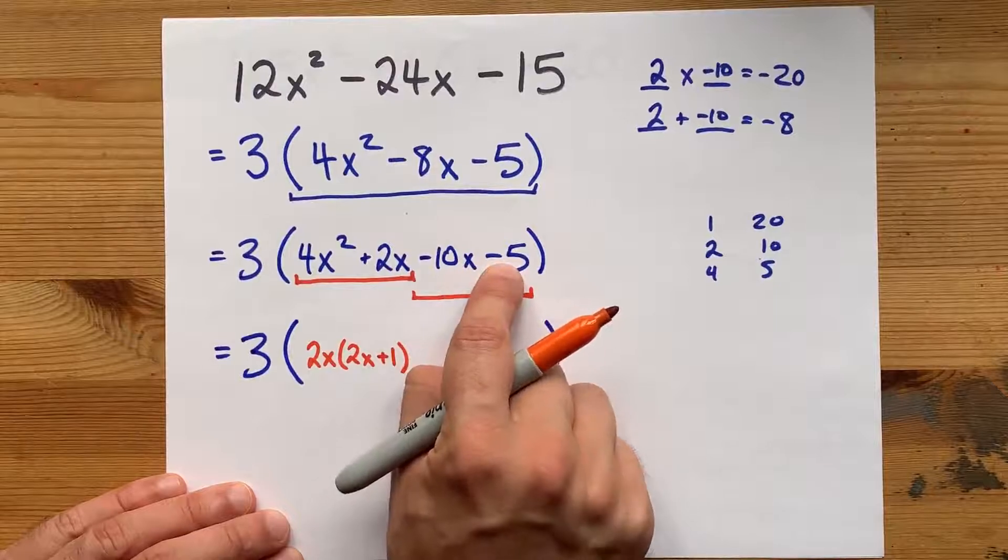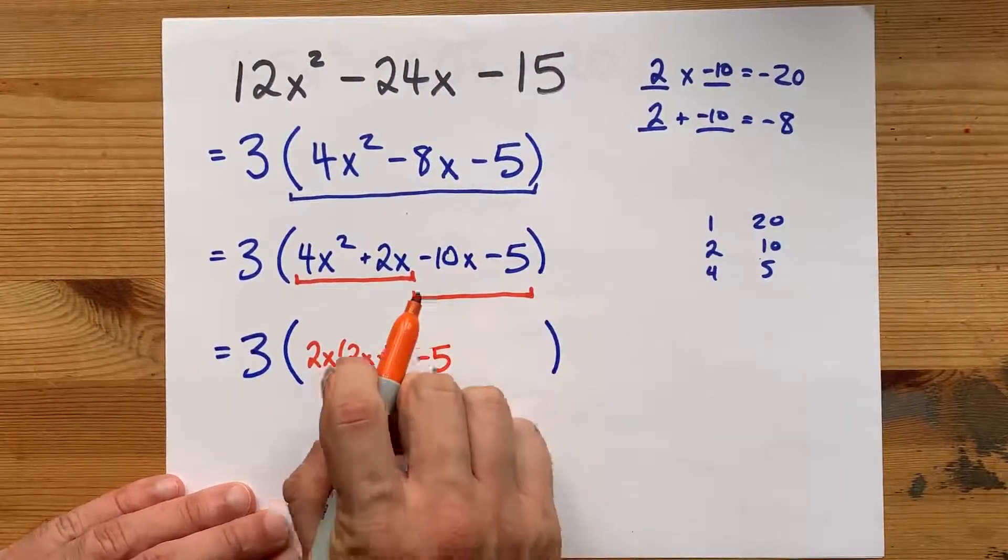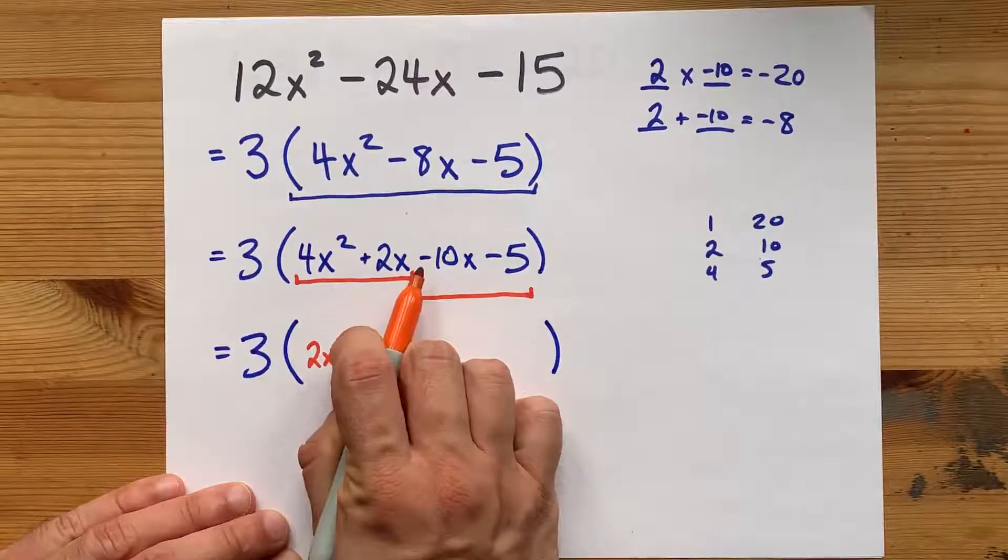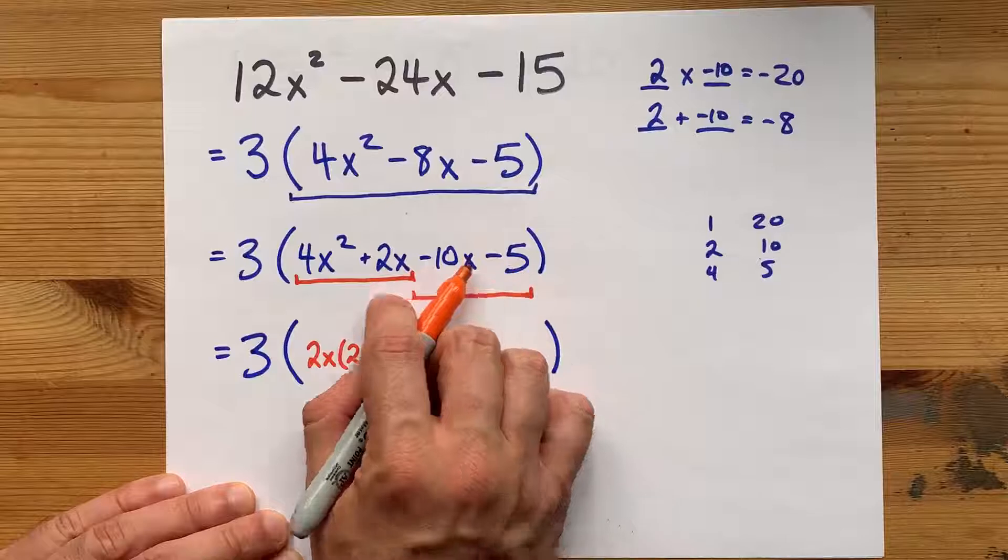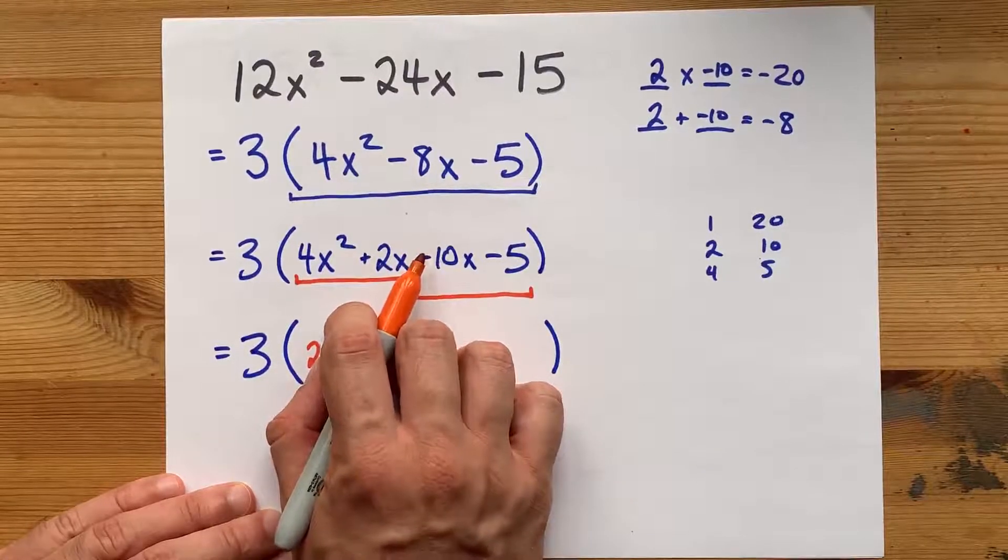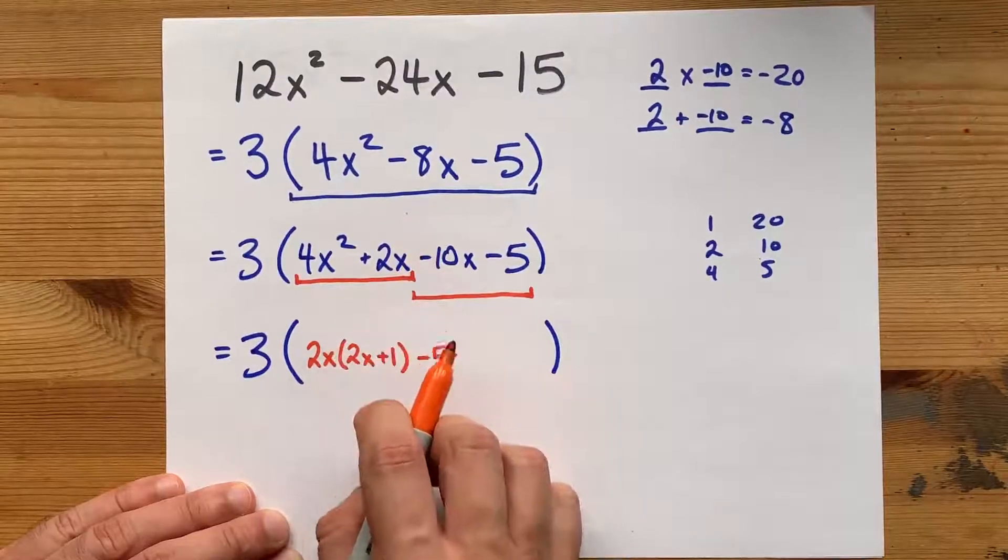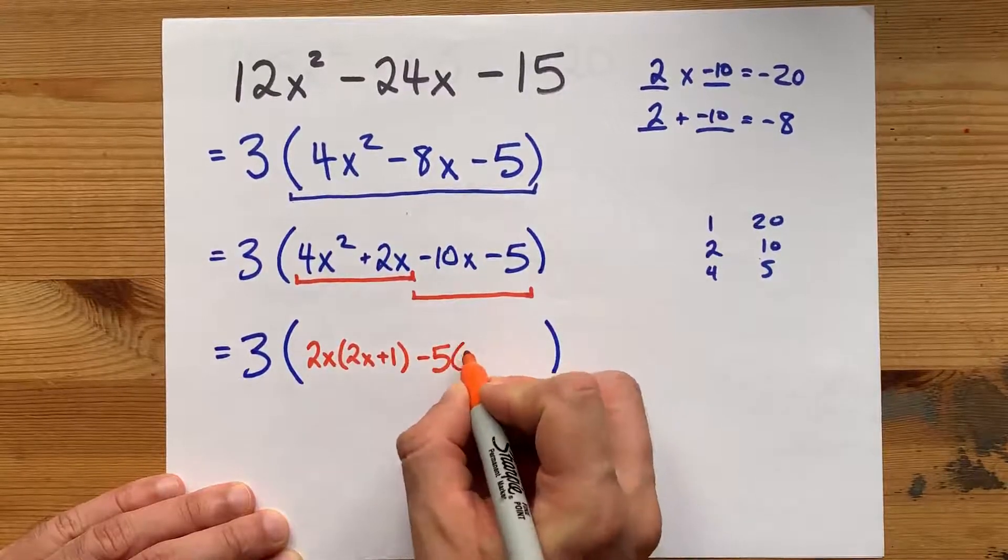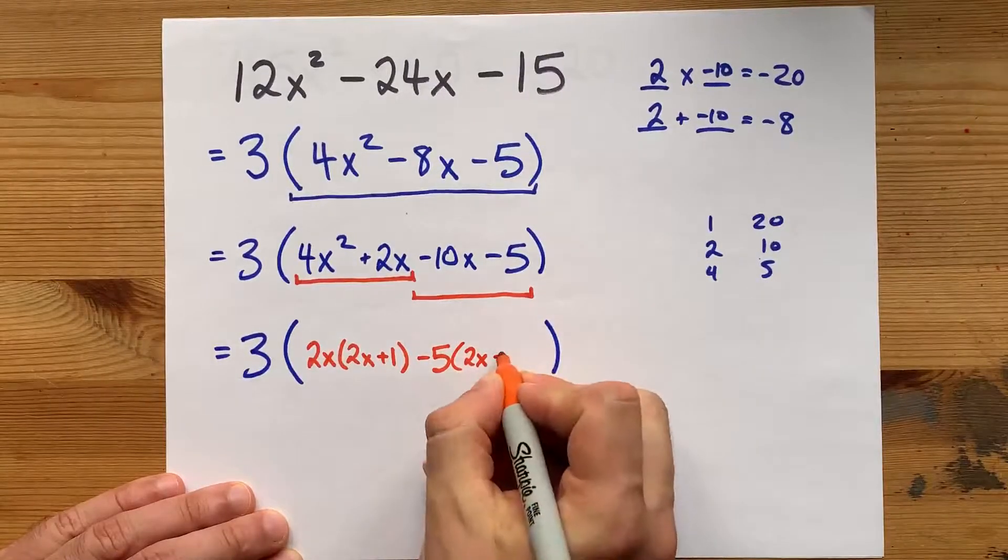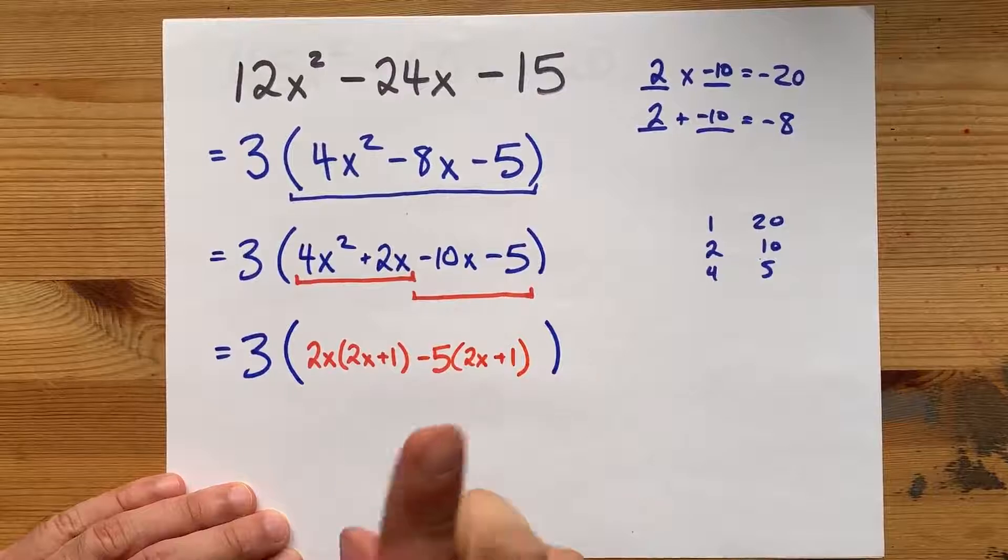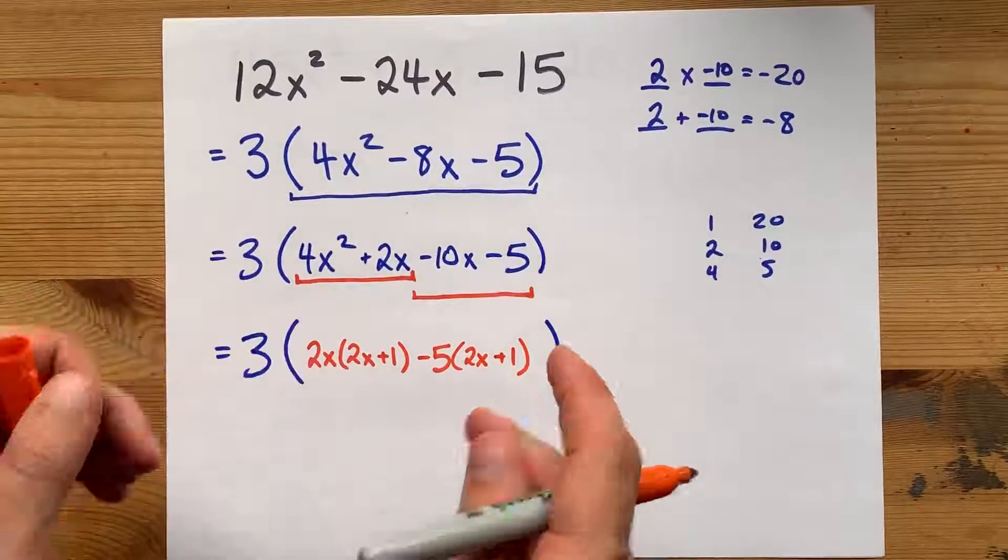Here, we got negative 10 and negative 5. Those are both divisible by negative 5. Remember, the sign at the beginning of the second pair, or I guess rather on the third term of this, after you've decomposed it, that's the sign you want to carry down. Negative 10x divided by negative 5 is positive 2x. Negative 5 divided by negative 5 is positive 1. You'll know you've done it right if your brackets match, which they do. Oh, yeah.